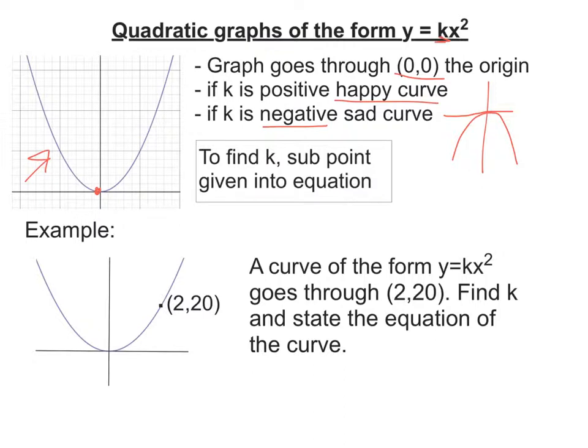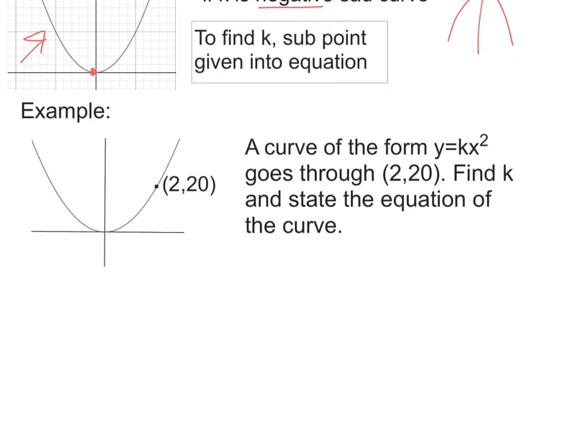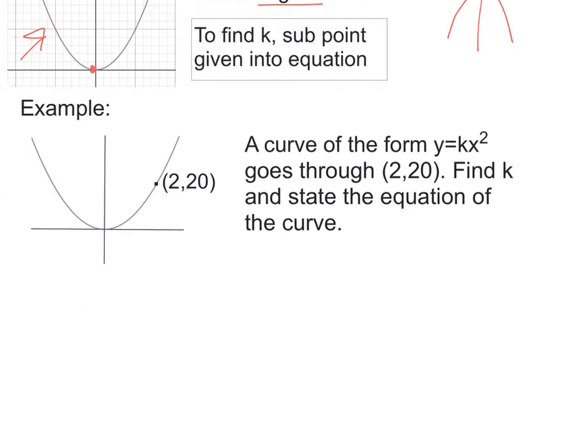So normally what you get asked to do is you get given a graph and a point, and you're asked to work out what the k is and state the equation of the curve. So what we need to do to find k is we sub in the point we know into our equation, and then we can work out what k is.